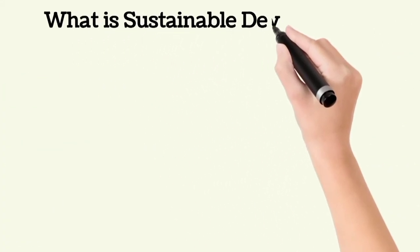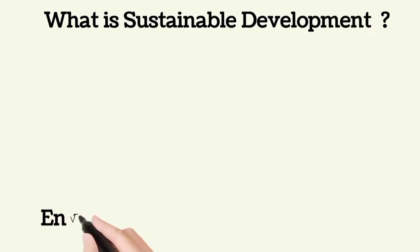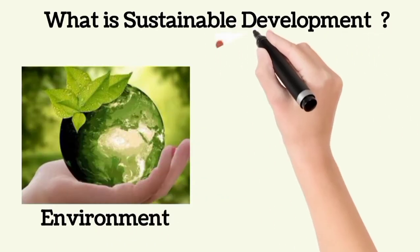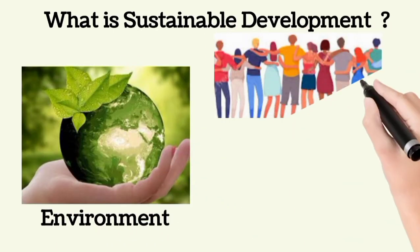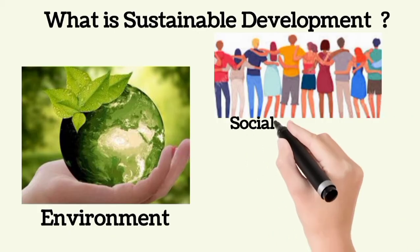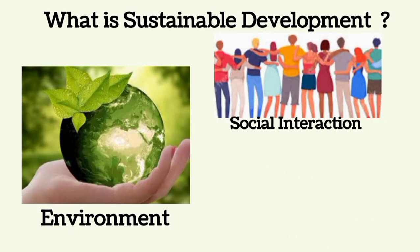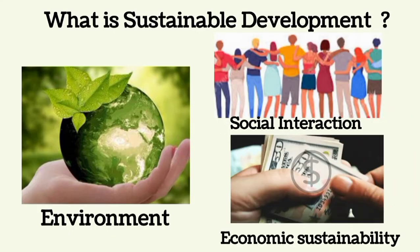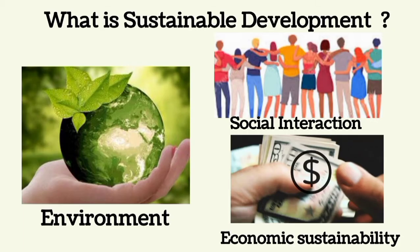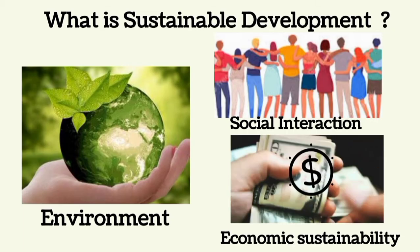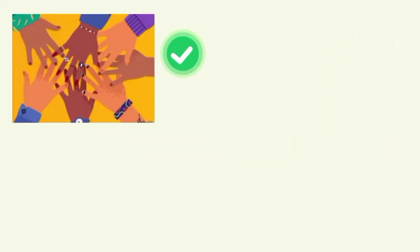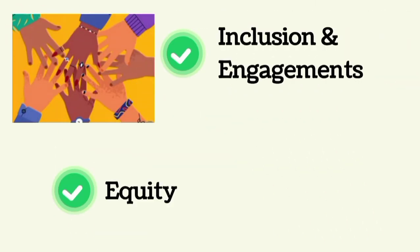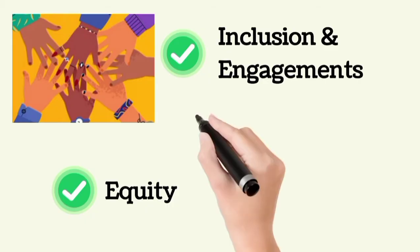Now, what is sustainable development? Sustainable development means meeting the needs of today's generation without harming the ability of future generations to meet their own needs. It involves balancing environmental, social, economic inclusion, and equity considerations to create a better world for all.